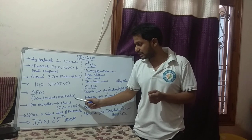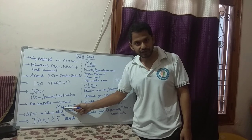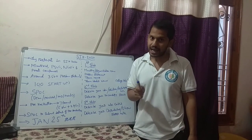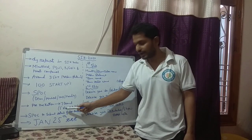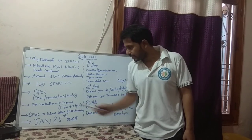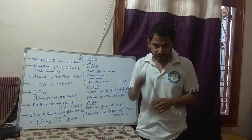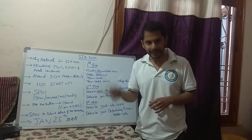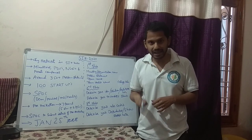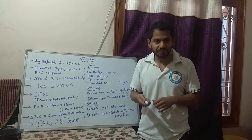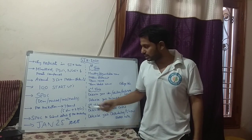From the internal hackathon, the SPOC has to select seven teams — please mark these words: seven teams selected from the college, out of which five should be software teams and two should be hardware teams. After selecting these seven teams, it is the SPOC — not the student — who submits all the details, including team name, teammates' names, mail IDs, and the proposed idea.